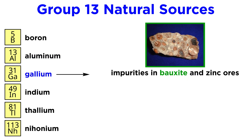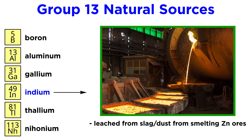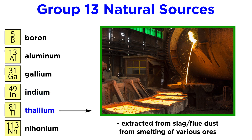Gallium is found in the form of trace impurity in bauxite and some zinc ores. It has an unusually low melting point and will tend to melt in one's hands. Indium is leached from slag and dust from smelting zinc ores, and is also found in ores of iron, lead, and copper. Thallium is extracted from slag and flue dust from the smelting of similar ores.